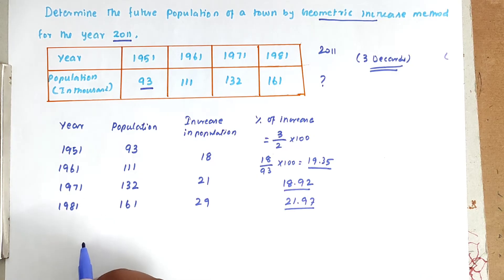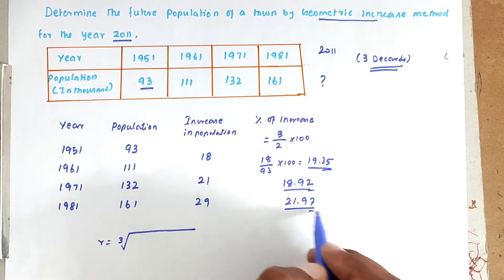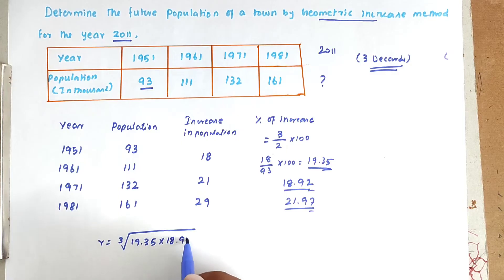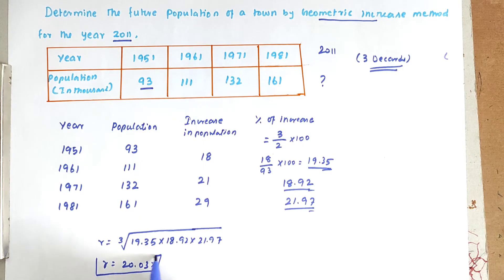Now we have to find out r, the geometric mean. That is r equal to the cube root of r1 into r2 into r3, which is the cube root of 19.35 into 18.92 into 21.97. Solving this, r equals 20.03 percent. This is the mean geometric growth rate.